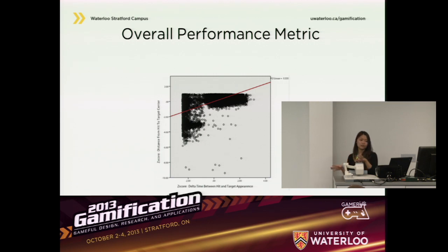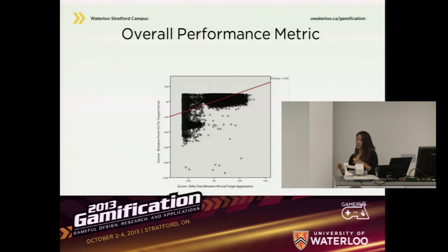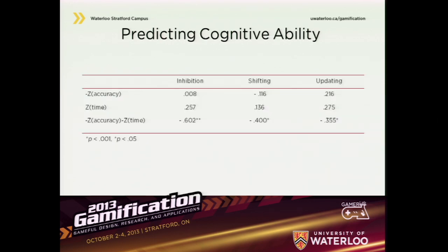We took Z-scores and standardized all speed-accuracy trade-offs to create an overall performance metric. Essentially, if someone is taking more time to respond, they should be more accurate, producing a trade-off difference of approximately zero. We wanted to calibrate this to each individual participant, especially for elderly adults who may vary in physical ability, in order to provide a more uniform gaming experience. Using this overall performance metric, we correlated scores with cognitive abilities and found it was significantly correlated with inhibition, shifting, and updating ability. This means our whack-a-mole game is able to predict these cognitive abilities.